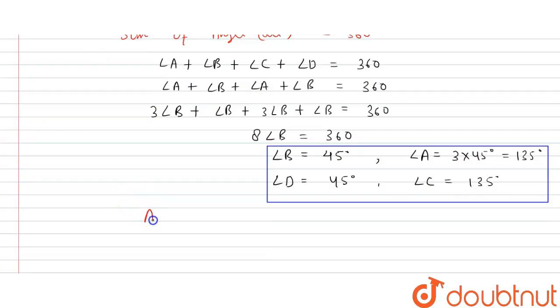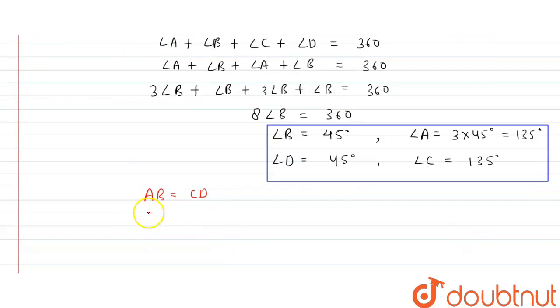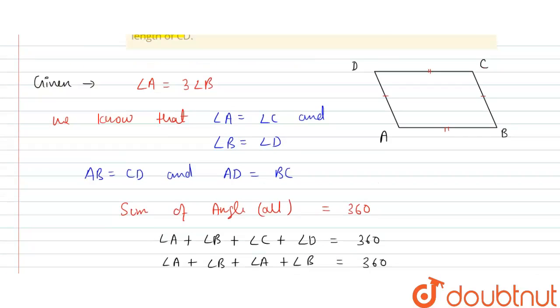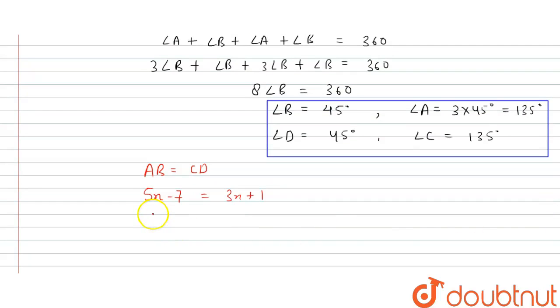AB is equal to CD. Using 5x minus 7 and 3x plus 1, we have 5x minus 7 equals 3x plus 1. This is given in the problem. So we write this thing, and what is this? This is equal to 2x equals 8, so x is equal to 4.